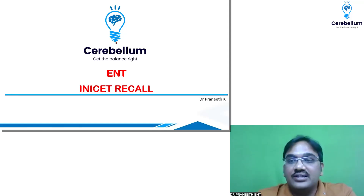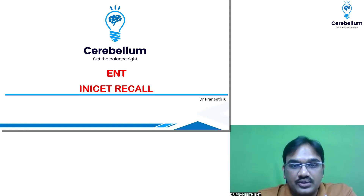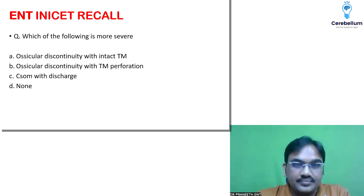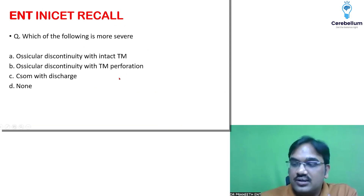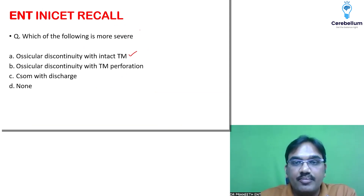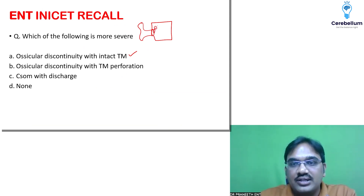Very easy and straightforward questions — let us recall one by one. Which of the following is more severe in terms of hearing loss? Ossicular discontinuity with intact tympanic membrane: as you know, this is your ear canal and eardrum, this is your middle ear, and your malleus is broken. Because there is ossicular discontinuity, the sound waves will end here — there is no continuity.